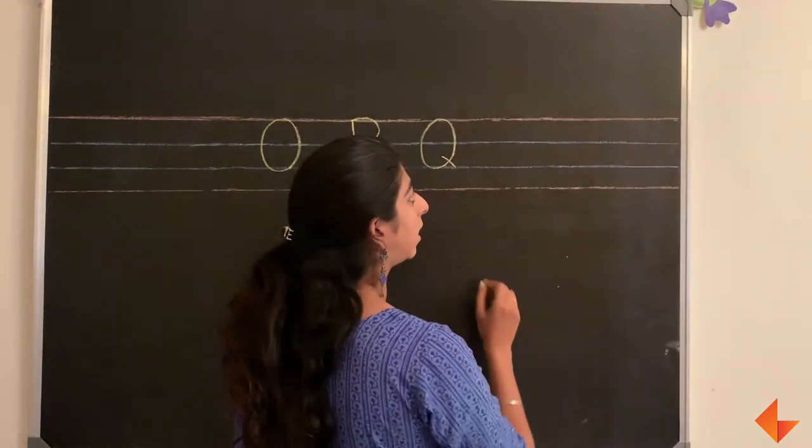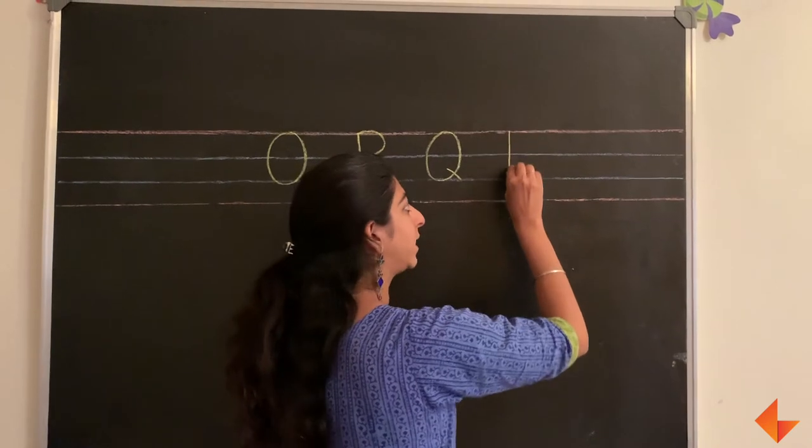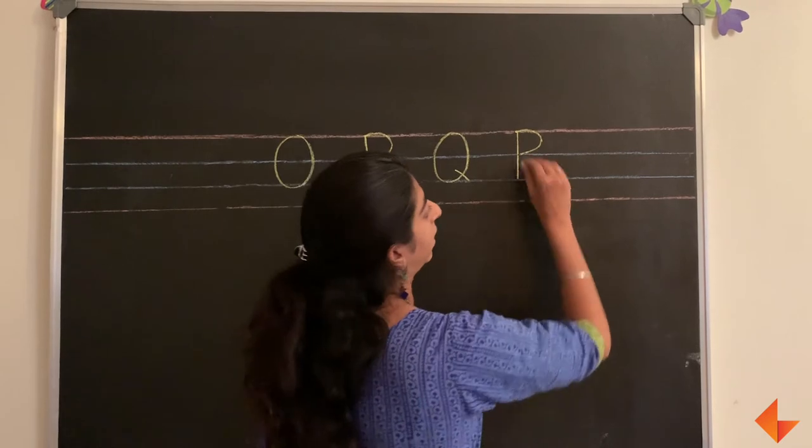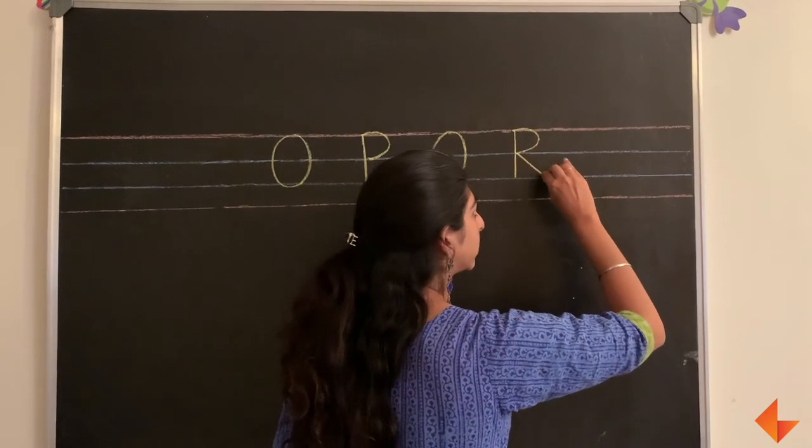To write the letter R, draw a standing line, draw a small curved line, and draw a small slanting line.